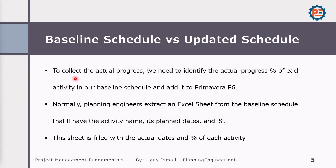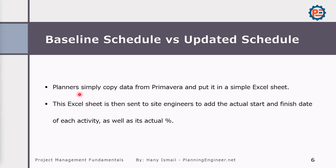To collect the actual progress, we need to identify the actual progress percentage of each activity in our baseline schedule, and then add it to Primavera P6. Normally, the planning engineer extracts an Excel sheet from the baseline schedule that will have the activity name, its planned dates, and the actual percentage. This sheet is then distributed to the site team to fill in. The planning engineer can also do this job themselves if they are site-based and the project is not very large.